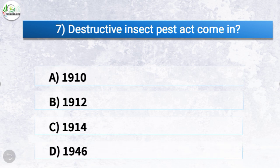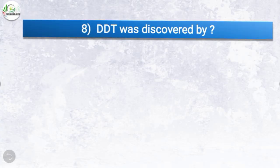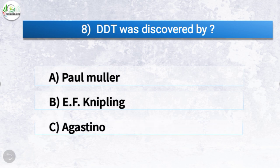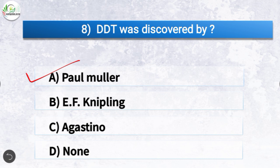Question number seven: the Destructive Insect Pest Act came in which year? The options are 1910, 1912, 1914, or 1946. The correct answer is option C, 1914. Question number eight: DDT was discovered by whom? The options are Paul Müller, E.F. Knipling, Agostino, or none of these. The correct answer is option A, Paul Müller. So DDT was discovered by Paul Müller.